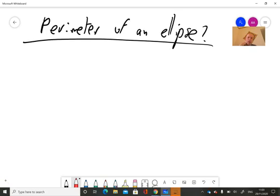Hi! Suppose that I want to calculate the perimeter of an ellipse. How should I do that?